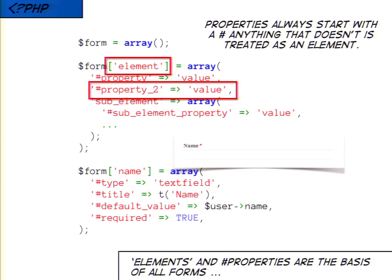Forms are defined by really giant nested arrays that are rendered into HTML for us. It seems a little weird at first — why wouldn't I just write the HTML? But defining forms as arrays allows for a lot more flexibility for both our module and other modules inside Drupal. It's a lot easier for PHP to deal with an array and move elements around than to deal with one really long string of already rendered HTML.